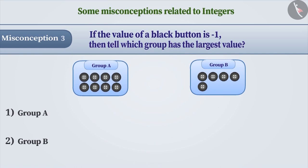Here, we do not have to compare objects. We have to find the values of both A and B groups and compare them. At times, just by counting the number of objects in each group, we assume group A has a larger value and choose option 1, which is wrong.